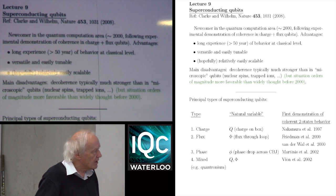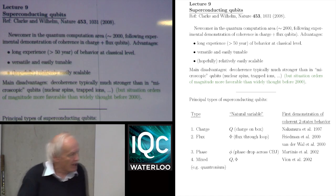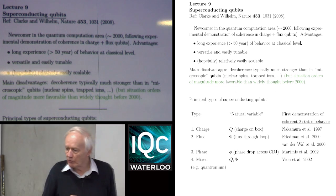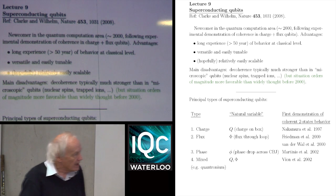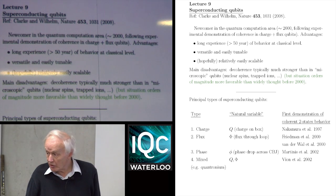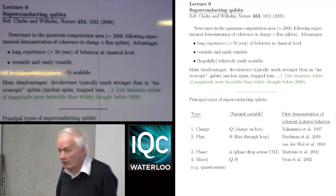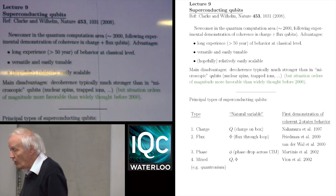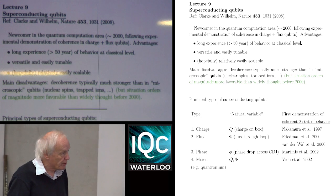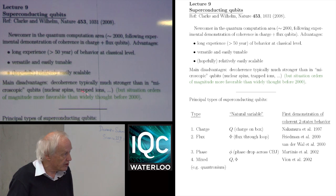There's one very obvious disadvantage of these superconducting qubits, which was the main reason why they were not seriously considered until 14 or 15 years ago. Namely, the decoherence is indeed typically much stronger than in microscopic systems. This is not at all surprising from the very nature of these systems — they are macroscopically or at least mesoscopically large and they're strongly interacting with their environments in a way that microscopic systems are not.